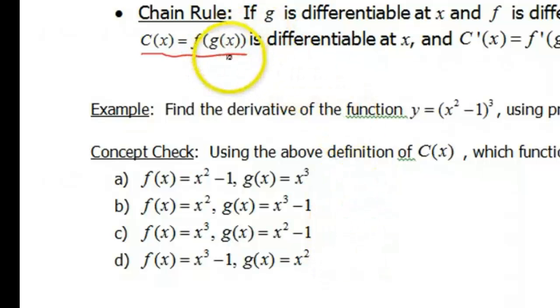Because g(x) is being composed into f, that means g is technically your inside function. Your inside function here is x² - 1. So the option that's correct is going to be c. Your outside function is f(x) = x³. Your inside function is g(x) = x² - 1.